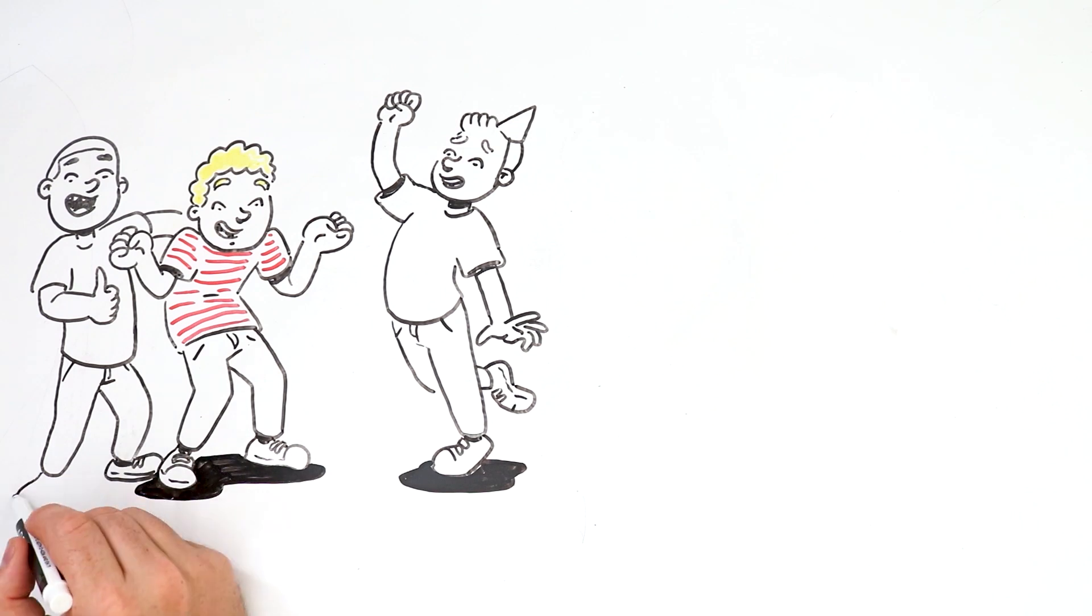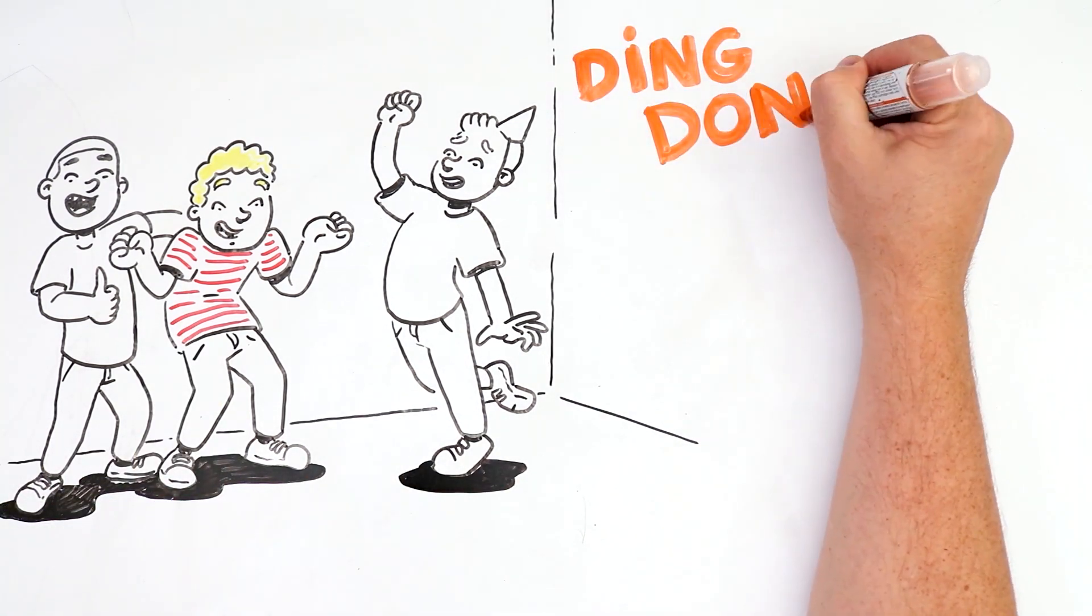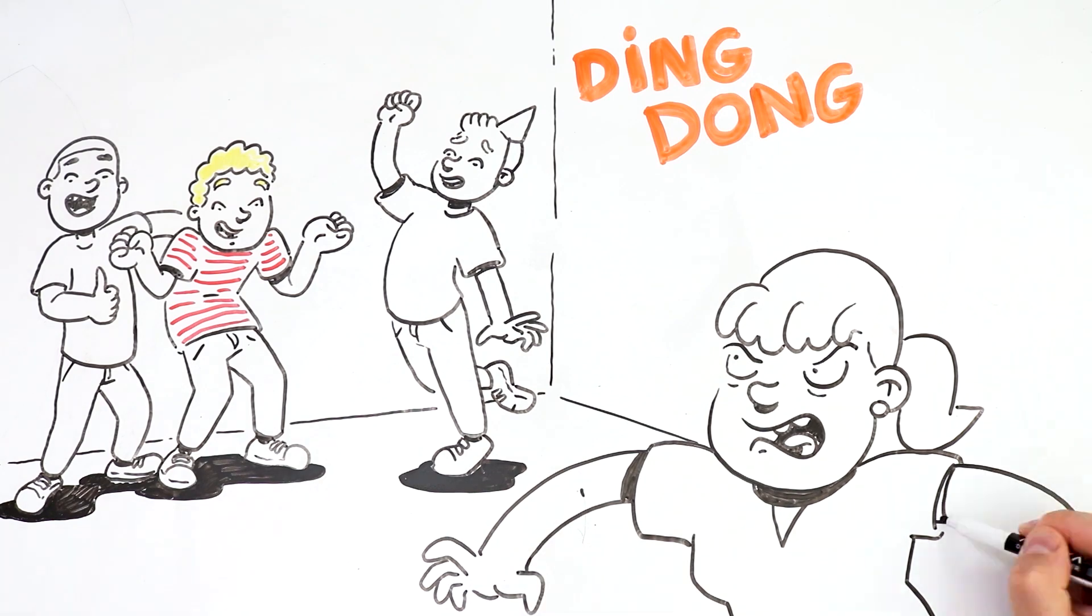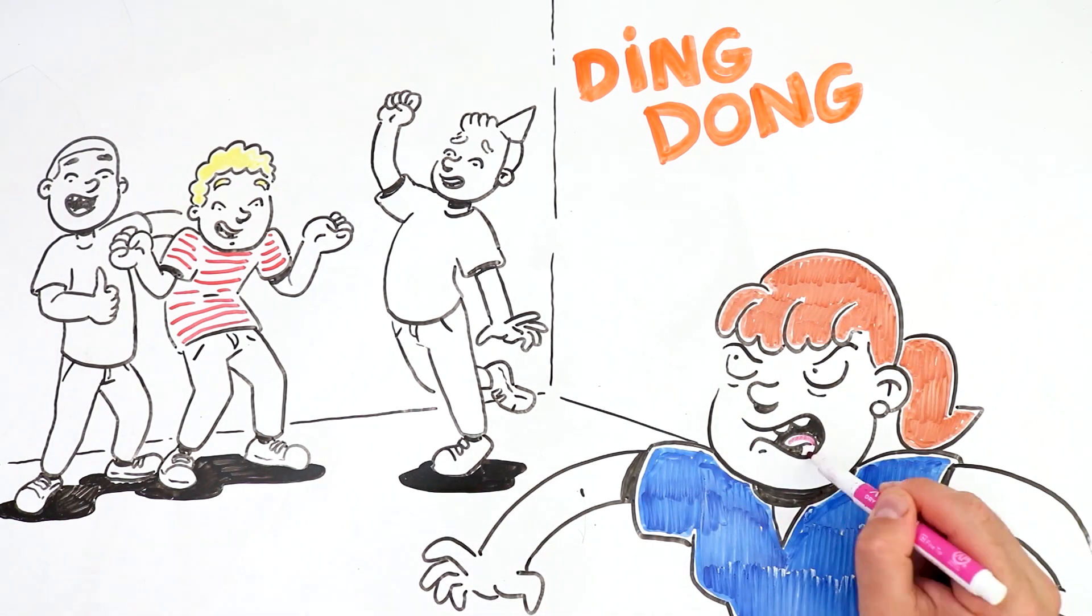However, I didn't expect at all what would happen next. Someone rang the doorbell, and when one of my friends opened the door, I heard my girlfriend's deranged voice. Where the hell is Victor?